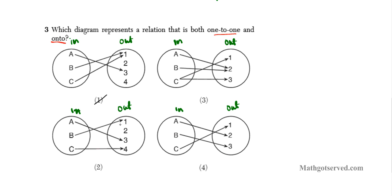Let's take a look at option 2. Output 1 is good because B is pointing to it. But output 2 is left alone, so this function is not onto — there exists an element in the output that doesn't have an input pointing to it. Let's take a look at option 3. Output 1 is good because C is pointing to it. Output 2 is good because A and B are pointing to it. Output 3 is good because C is pointing to it — so this function is onto. For option 4: C points to 1, A points to 2, and B points to 3. So both options 3 and 4 are onto.